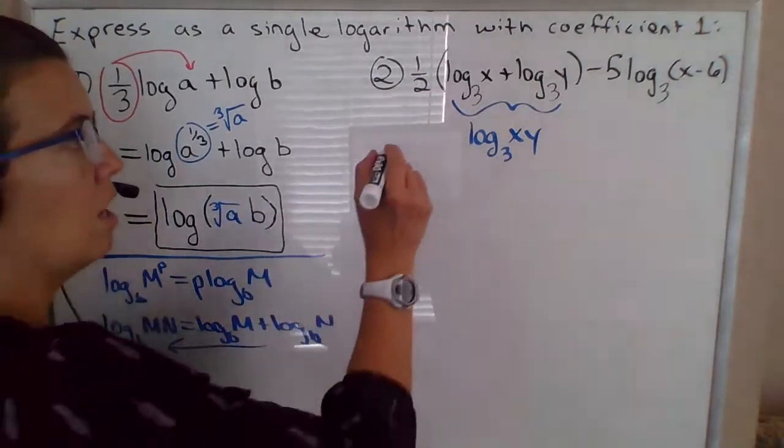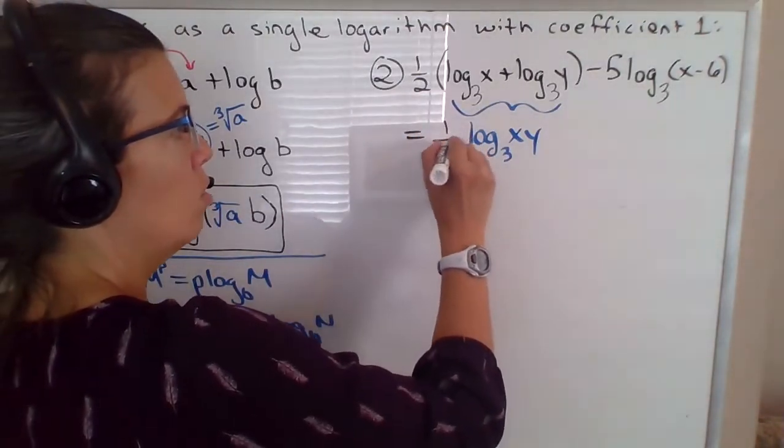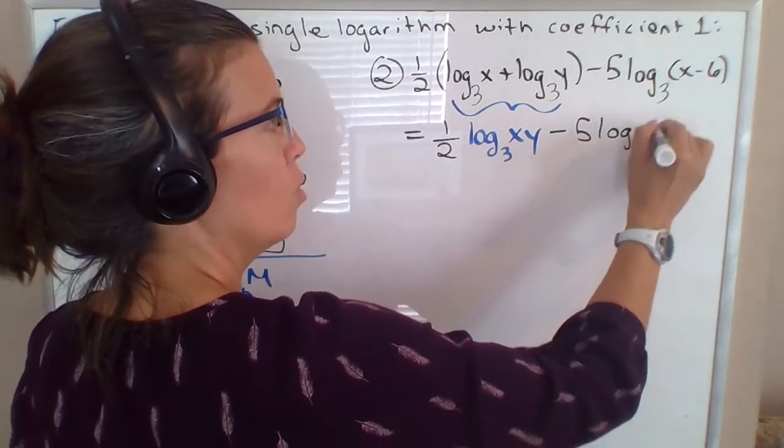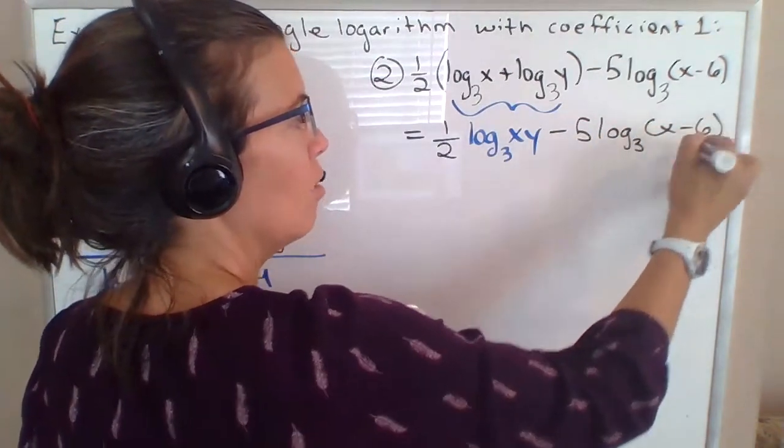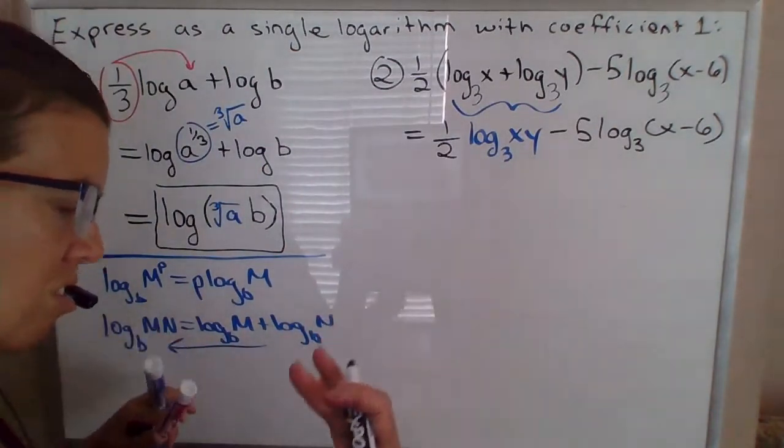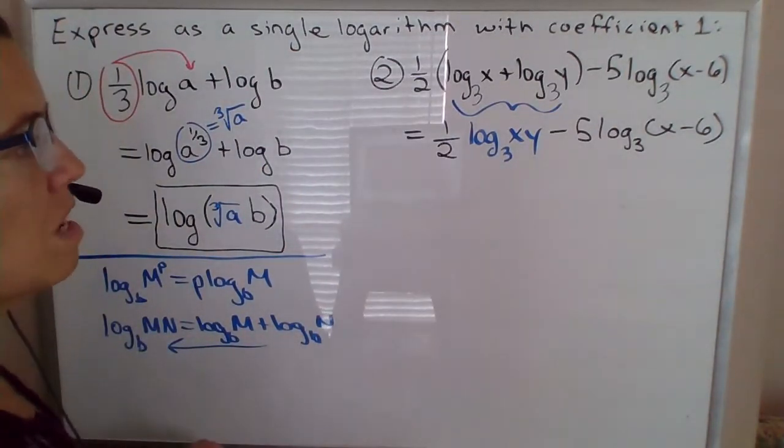All right, and that still has the coefficient one half in front of it. And then I'm going to leave this part alone for now. So one thing at a time with these logarithms, just take it easy. Don't try to attack it all at once. Just reason one step at a time through these things.